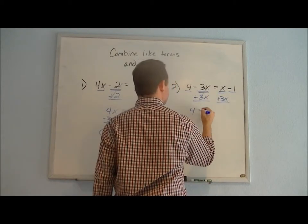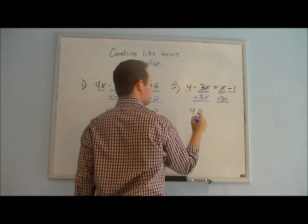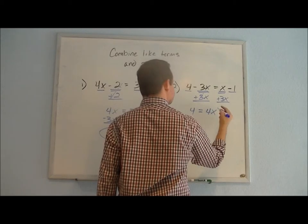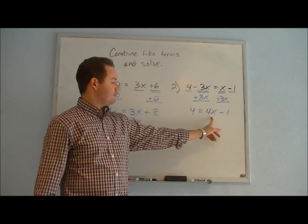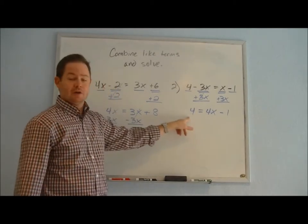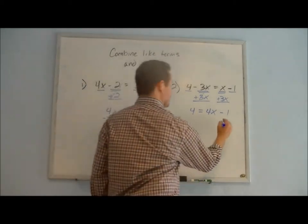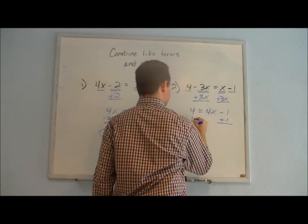So we're left with 4 equals 4x minus 1. Now we want to leave the variable on one side and get all the numbers to the other side, all the constants. So we can add 1 to both sides, cancel those out, and we have 5 equals 4x.